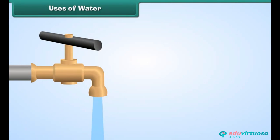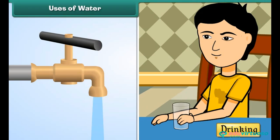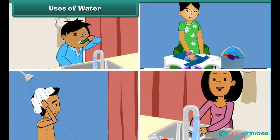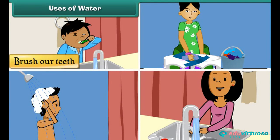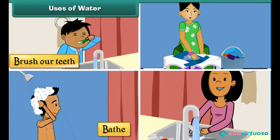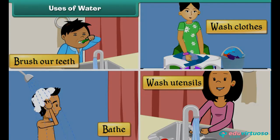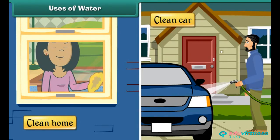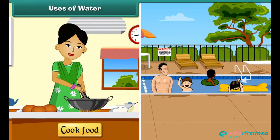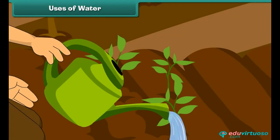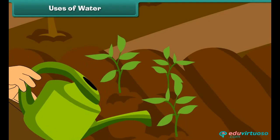Water has many uses. Most importantly we use it for drinking. We also use water to brush our teeth, bathe, wash our clothes and utensils, clean our homes and cars, cook food, and swim. We use it to water our plants as well.